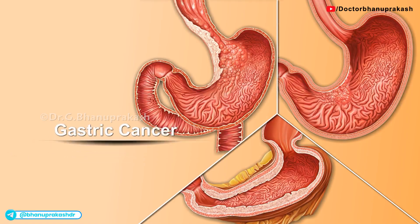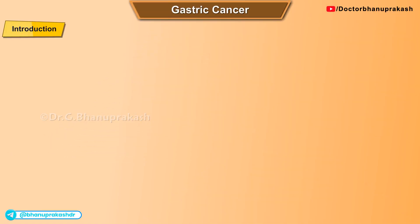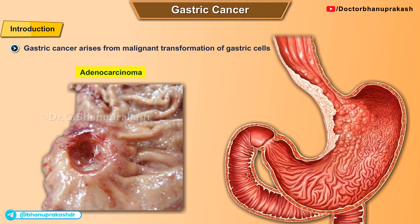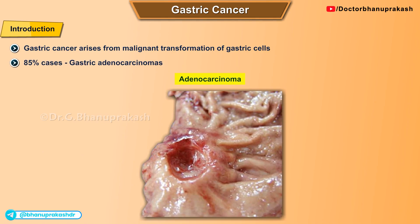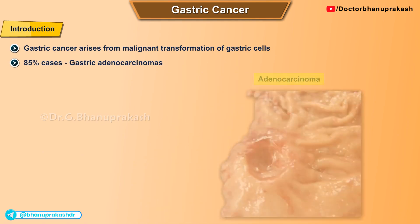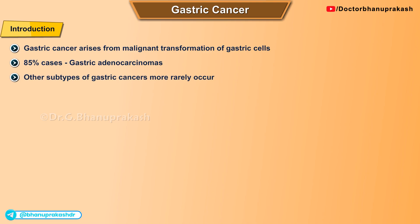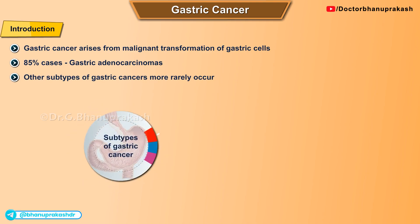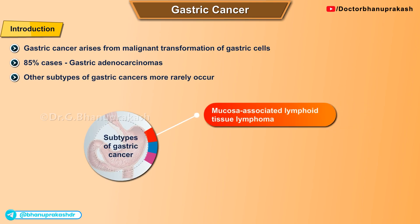Gastric cancer arises from malignant transformation of gastric cells. 85 percent of gastric cancers are gastric adenocarcinomas. There are other subtypes of gastric cancer that occur more rarely, for example mucosa-associated lymphoid tissue lymphoma.